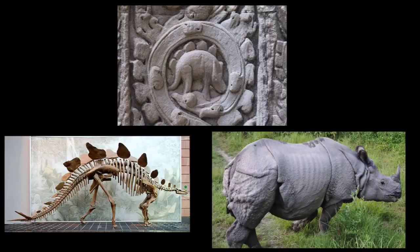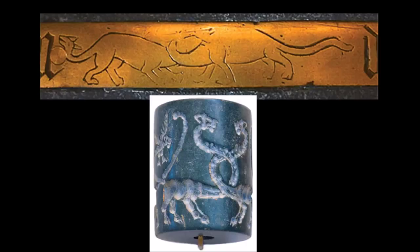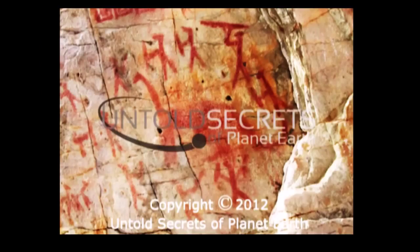Look, dinosaurs couldn't have lived together with human beings because they went extinct 65 million years ago, so forget about it. And it isn't as clearly a dinosaur as other ancient drawings, such as this one from the 15th-century tomb of Bishop Bell in England, or this Mesopotamian cylinder, or this ancient drawing from Peru. So we shouldn't put too much attention to it anyway.